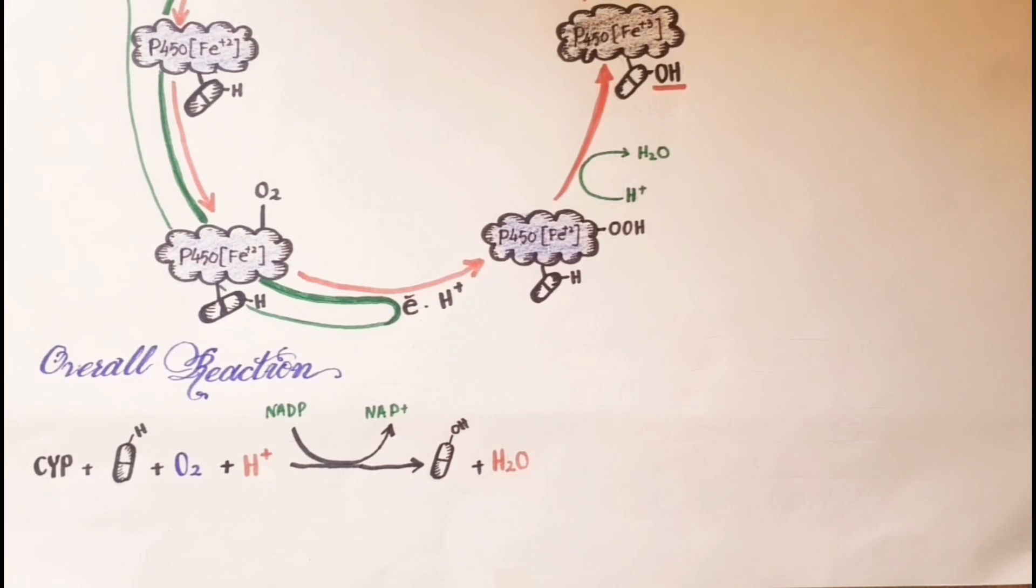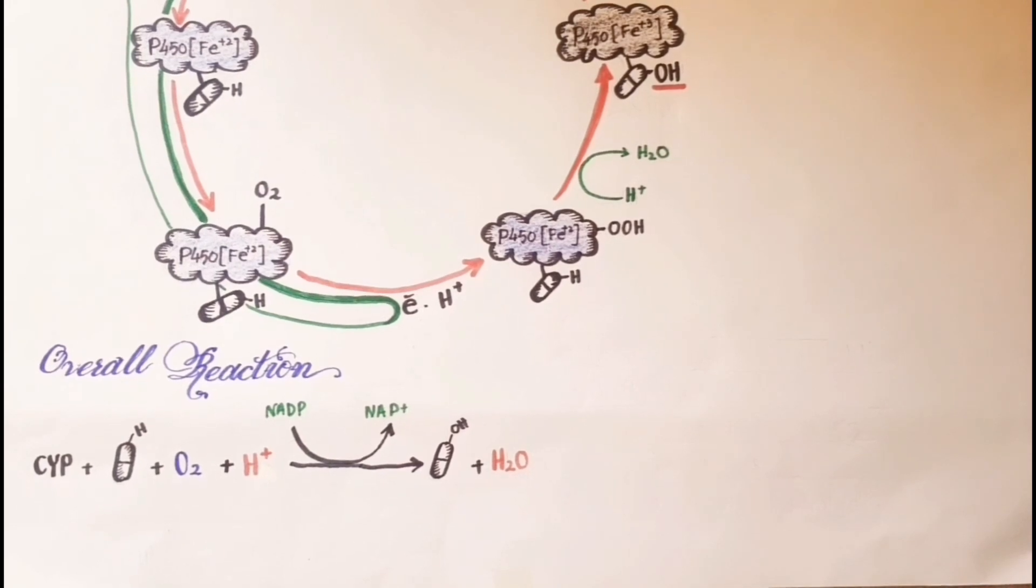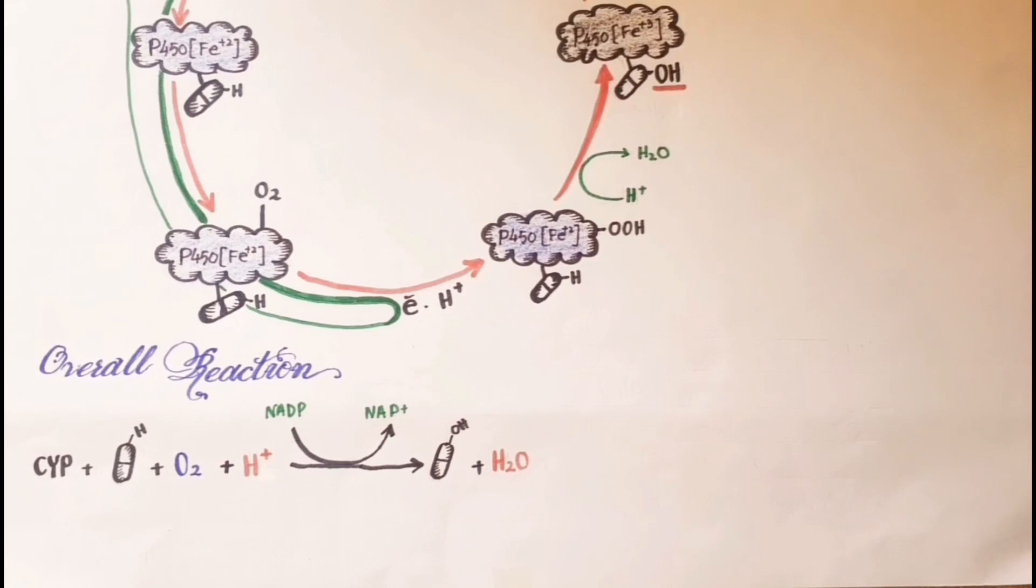In the overall reaction, the drug is oxidized and oxygen is reduced to water. The mechanism involves a complex cycle, but the overall net effect of the reaction is quite simple: the addition of one atom of oxygen to the drug to form a hydroxyl group, the other atom of oxygen being converted to water.